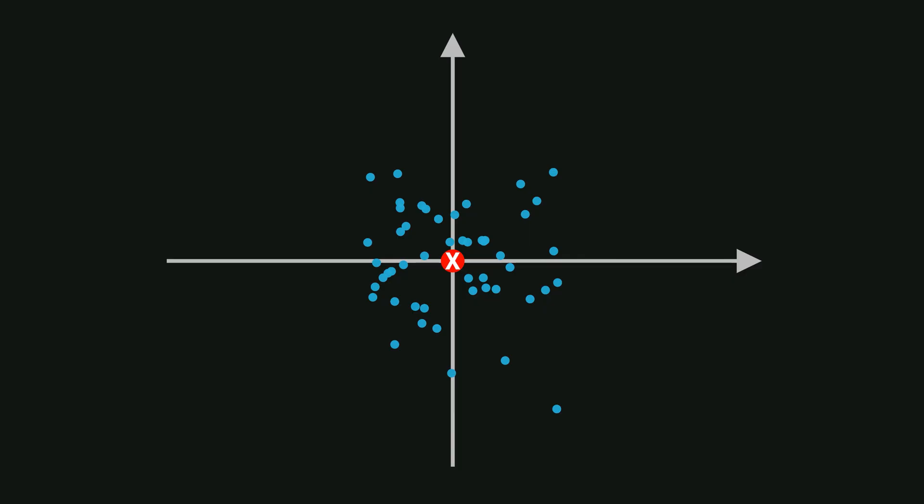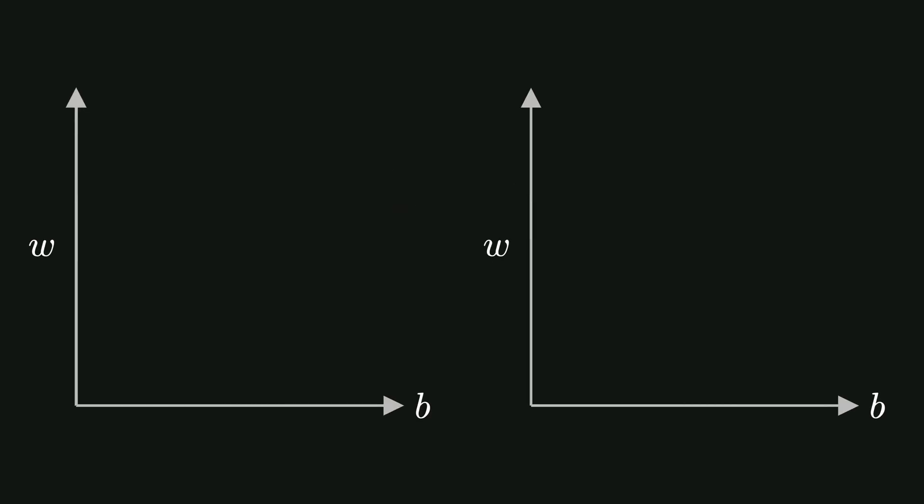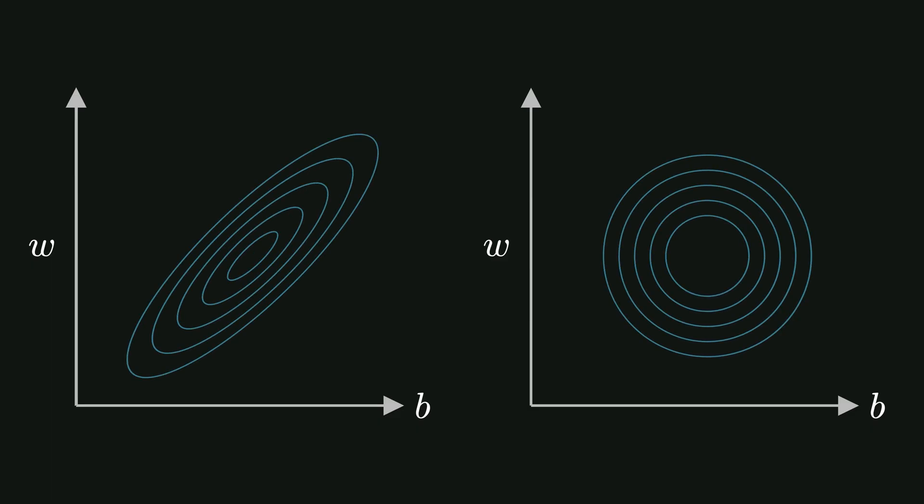Now, one important question is, why do we actually do this? Let's understand this with an example. Imagine we are only using two parameters, w and b. On the left, we have the un-normalized data, and on the right, we have the normalized dataset.